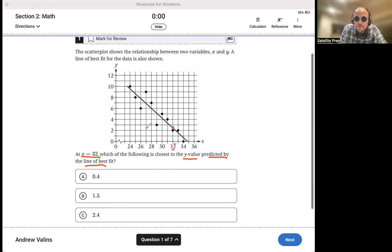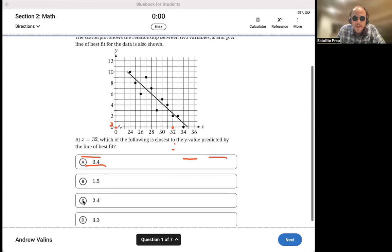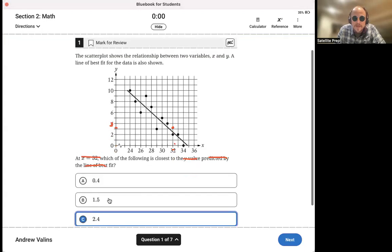And then we got to travel over until we see where about that hits on the Y axis, which, my friends, is about 2.5. Be careful. This is 3, right? So it's about halfway between 2 and 3. And then what we do next is we look for the answer that looks that way. It's 2.4. And that's the answer. There's really no ambiguity about it.